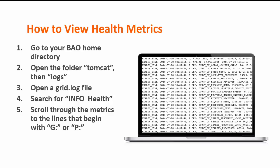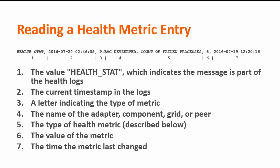So you can open it up on your CDP, your HACDP, it doesn't matter. To read a health metric entry, you just have to parse it into its individual points. First, 'health stat', which occurs at the beginning of every message as part of the health logs. Then the date it was logged, who is logging it — a peer named BMC devserver. What we're logging — the number of failed processes, which is three. And the last date is the last time it changed, so this says the last time this peer failed a process was a little after noon on the 19th of July.